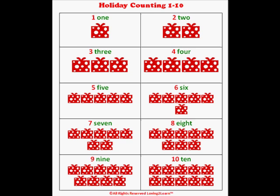Holiday counting, one to ten! We start out — here is the number one. Here's the word one. Spell the word one with me: O-N-E. And count the presents: one. Here's the number two. Here's the word two. Spell the word two with me: T-W-O. Count with me: one, two. Here is the number three. Here's the word three. Spell it with me: T-H-R-E-E.